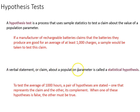A verbal statement or claim about a population parameter is called a statistical hypothesis. To test the average of a thousand hours, a pair of hypotheses are stated. One represents the claim, which is going to be that it's good for an average of a thousand charges, and the other is its complement, that it is not going to be good for an average of a thousand charges. When one of these hypotheses is false, the other must be true.